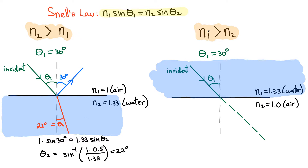For case number two, we're going to go from water to air — that's from a high index to a low index. We consider the same incident angle of 30 degrees. There's still going to be part of that light that's reflected at 30 degrees. But really what we want to calculate is what the refracted light is going to do — what angle the refracted light makes with respect to this normal. If there was no change in index, the light would just propagate in a straight line, but now it will be refracted at a different angle.